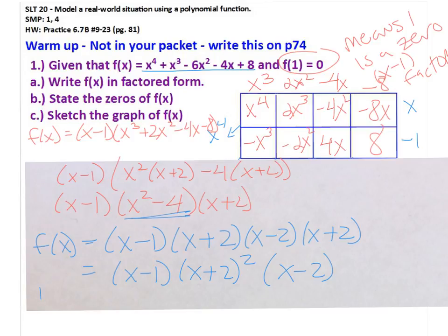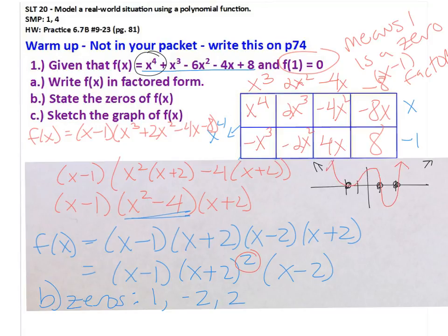So part b says state the zeros, so the zeros are 1, negative 2, and 2. So to sketch my graph, negative 2, 1, and 2. Because it's an even degree with a positive leading coefficient, my end behaviors are both going to be towards infinity. So connecting my zeros, considering my multiplicity, this is what your graph should look like.